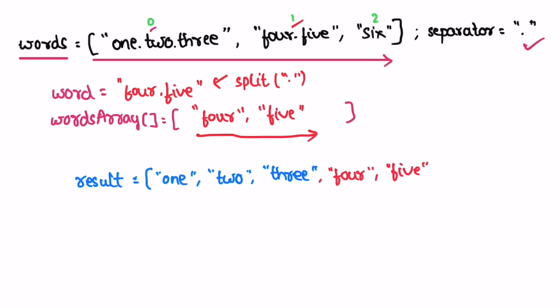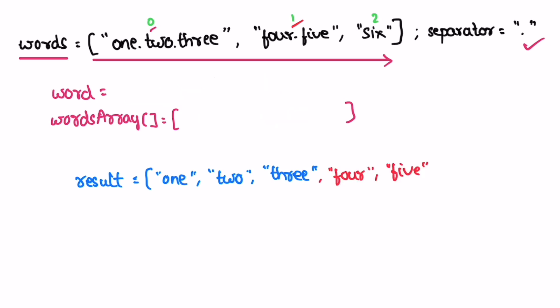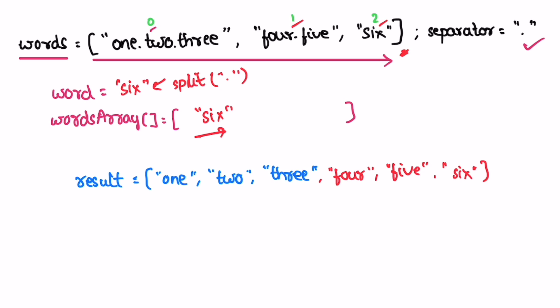In the next iteration, i equals two. We take that string and apply the split method — there is no separator inside it, so we add that word as-is into the words array. We iterate through and add it into the result list because it is not an empty string. Finally we reach the end of the words list and whatever is in the result will be returned as the output.